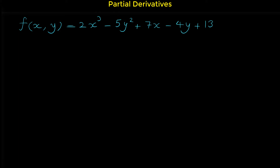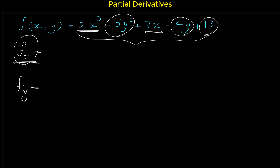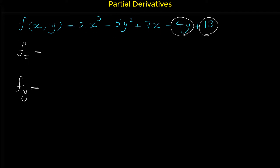For this function we have two partial derivatives: the first one is f sub x, the derivative of f with respect to x, and the other is f sub y, the derivative of f with respect to y. For finding the derivative with respect to x, we take the derivative of every term that has the variable x and consider all other terms as constants. Every term without x is a constant, so its derivative is zero.